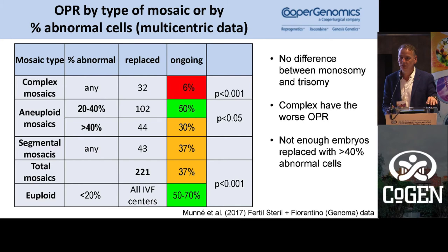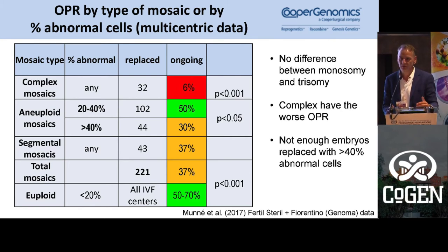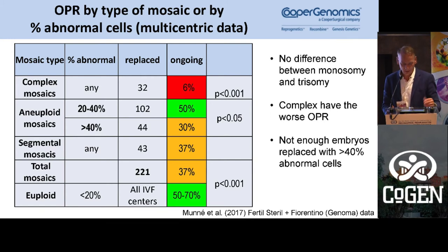Interestingly, we did not find a difference between mosaics that had a chromosome in trisomy form versus monosomy form. Some people say that if it's a monosomy mosaic there's no chance of it implanting and they would not transfer it — but we haven't seen that, and it makes sense because if there is a monosomy cell line, somewhere there was a trisomy line and vice versa. The PGDIS guidelines recommend transferring monosomies before trisomies, but we don't agree with that — the data doesn't support it.